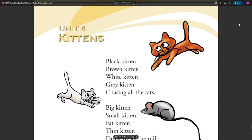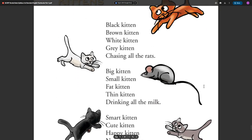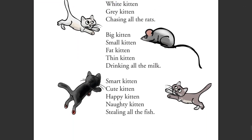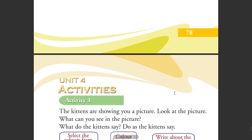We are going to be in a list of kittens. We will see the following instructions: black kittens, brown kittens, white kittens, gray kitten chasing all the rats. Big kitten, small kitten, fat kitten, thin kitten drinking all the milk. Smart kitten, cute kitten, happy kitten, naughty kitten stealing all the fish.